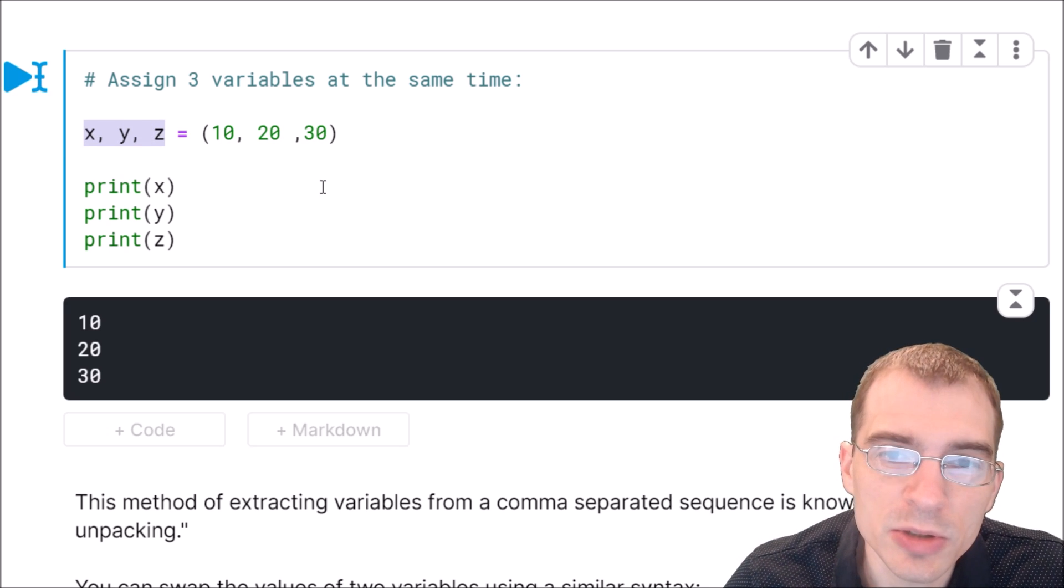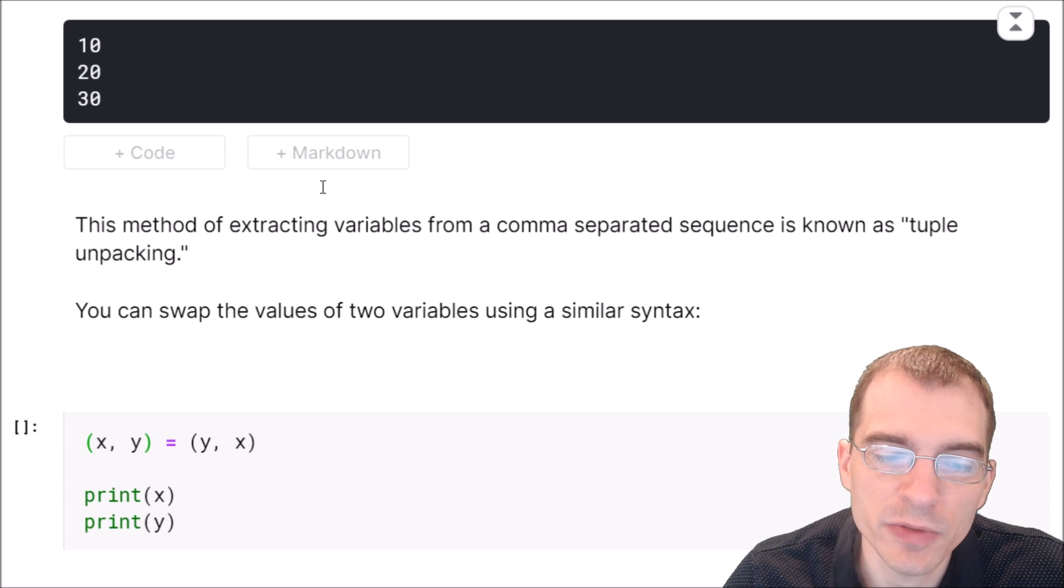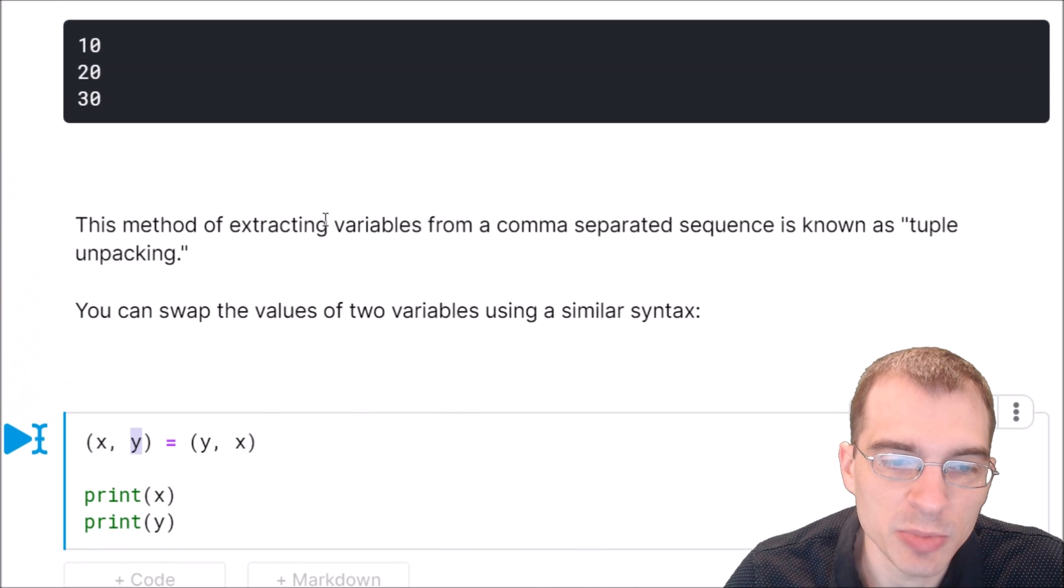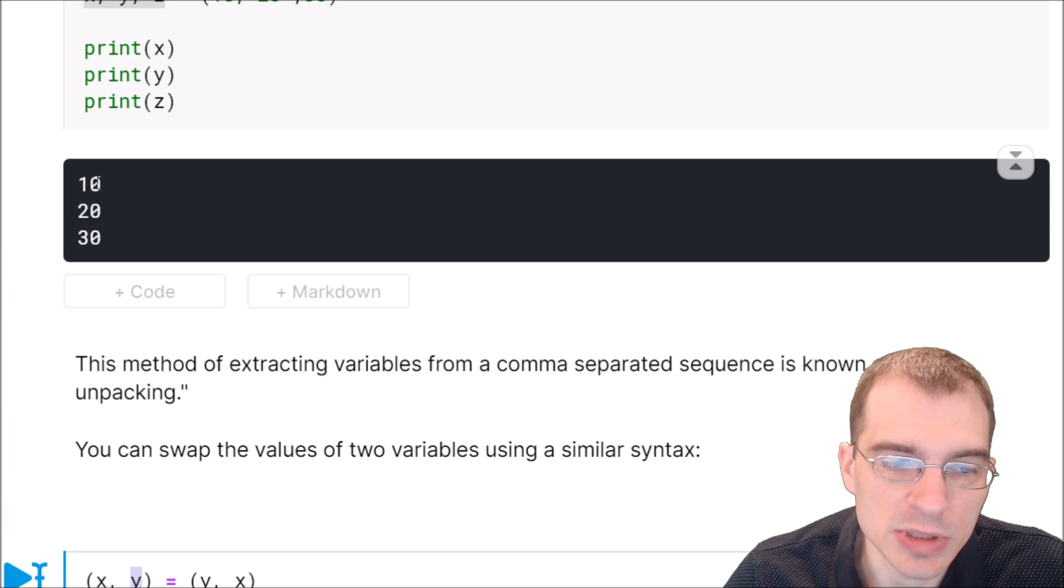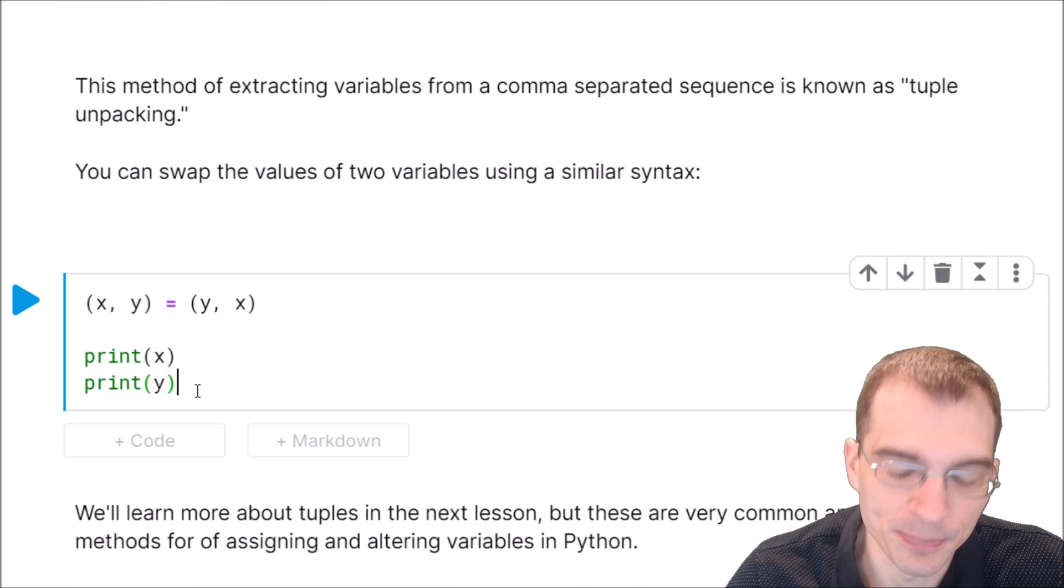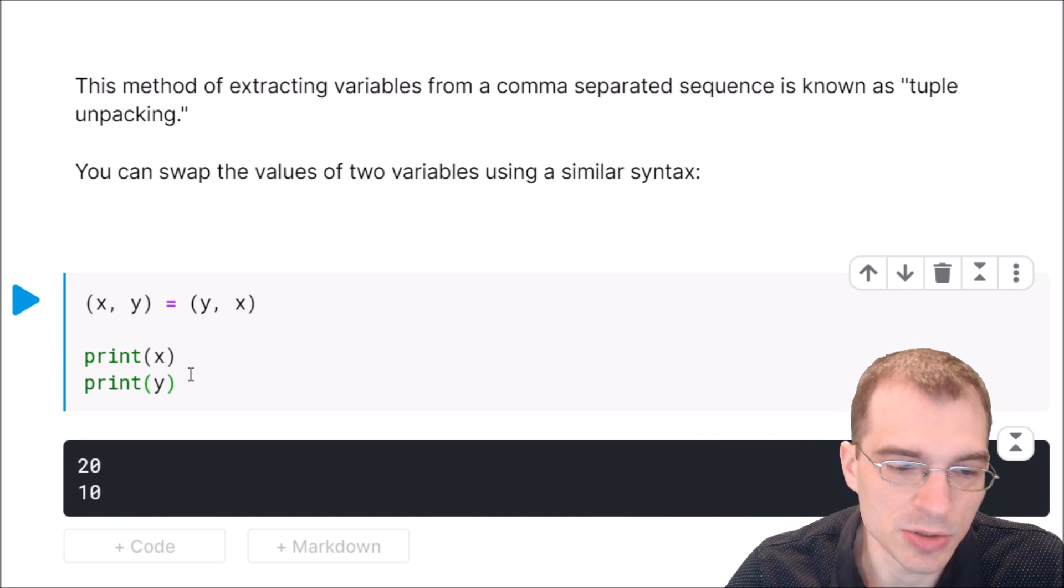Another trick you can do with tuple unpacking is swapping values of variables. This is going to take the value of y and put it into x, and then take the value of x and put it into y. Let's check above what those were. x was 10 and y was 20. So after running this, x will now be 20 and y will be 10.